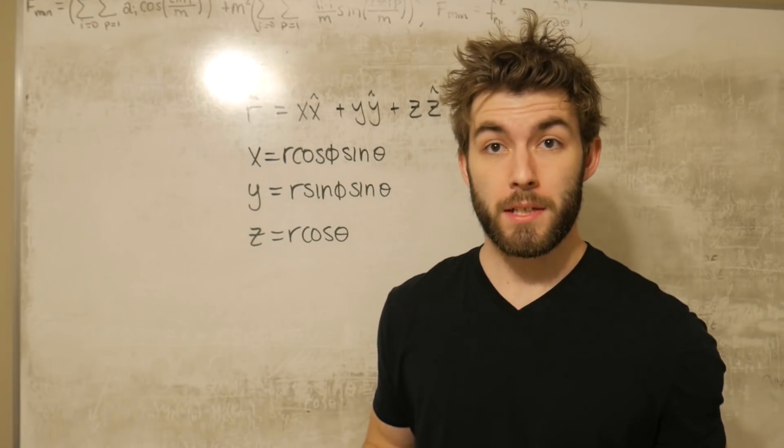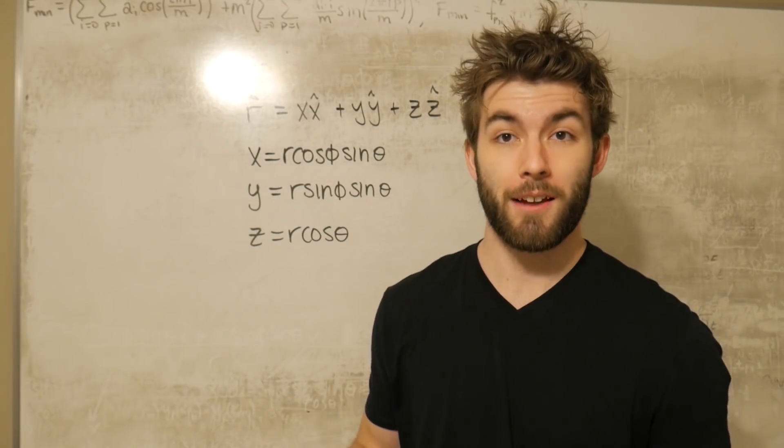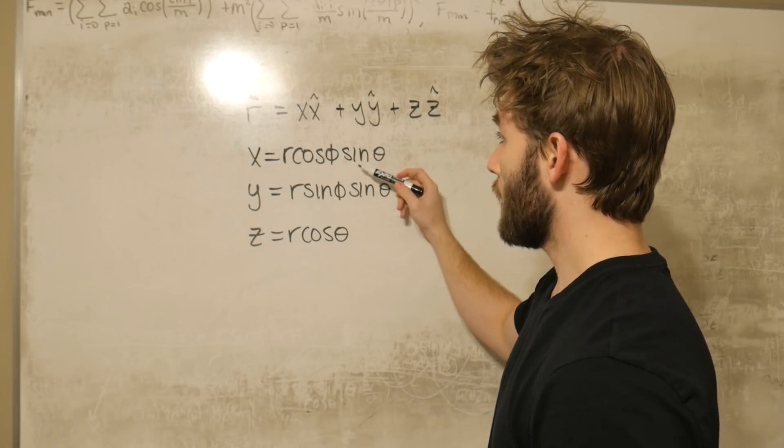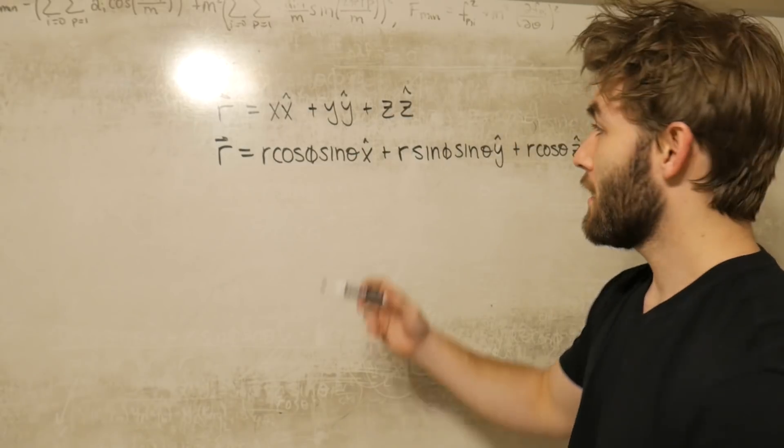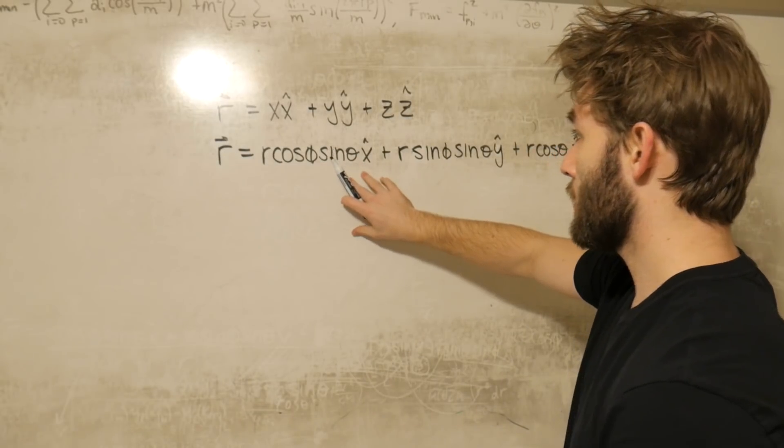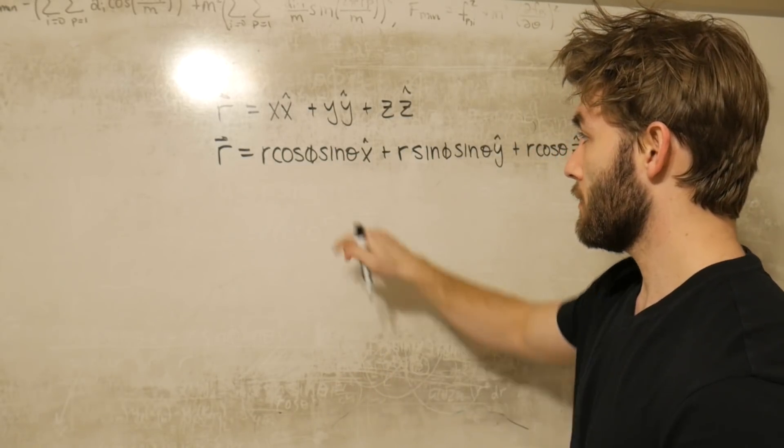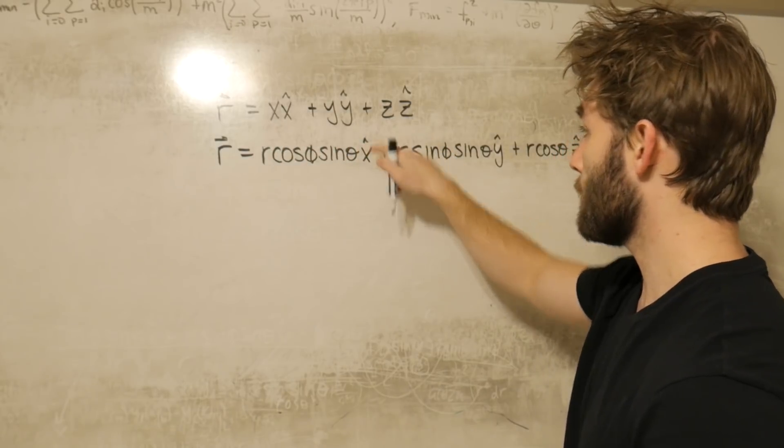Now in the previous video that I mentioned, this is the relationship that I derived. Plugging these values into our position vector will give us the following result. You'll notice that in order to obtain this result, all I did was substitute those conversion factors into our x, y, and z components respectively.